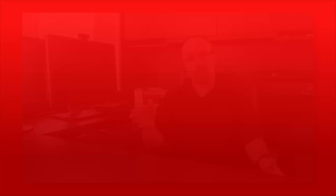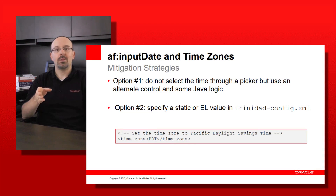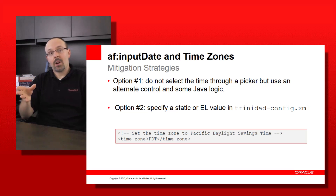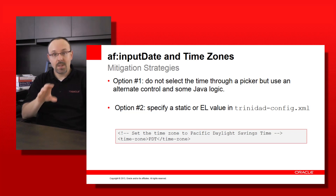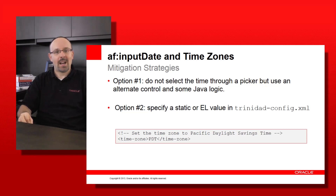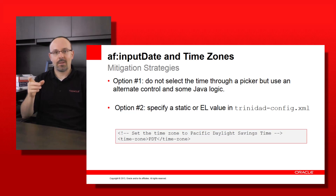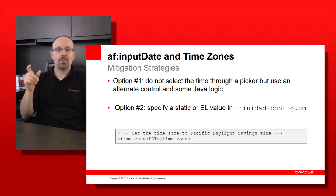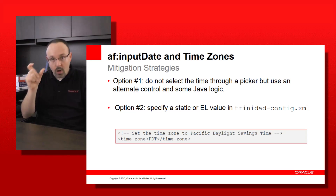There are two strategies you can use to mitigate that problem. The first one is to simply use other controls than the date picker to manipulate the time zone. You will use the date picker to specify the date and time, and have, for example, a drop-down list to select the time zone. Then you retrieve all of that on the server side and you will have a datetime that is meaningful and in the correct time zone. The other strategy is to force ADF to always use the same time zone. If this fits your time zone management strategy, the only thing you have to do is put a specific value in the faces-config descriptor with the code for the time zone you want everything recorded in, and you won't have any problem.